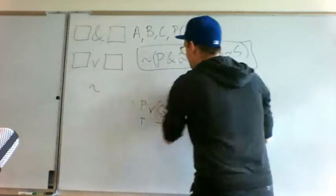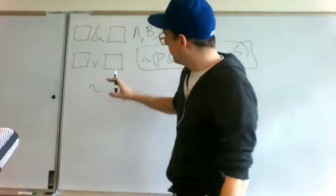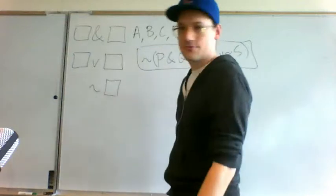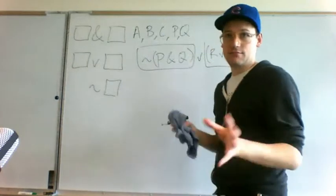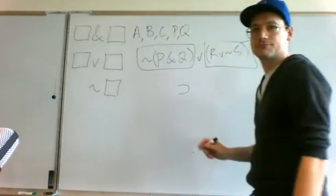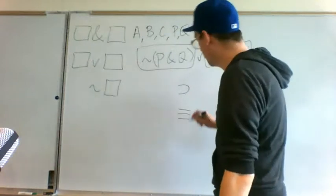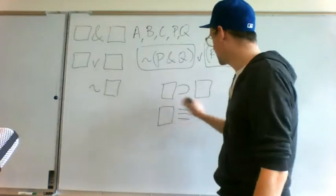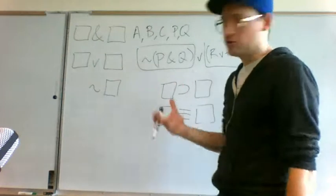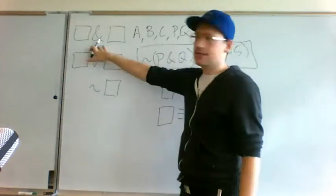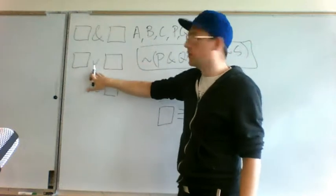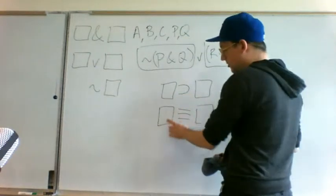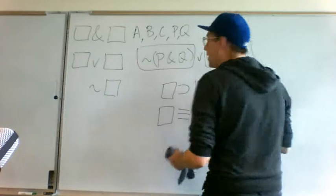The two operators we haven't talked about yet — the main things to cover today — are the conditional, the horseshoe symbol, and the triple bar or biconditional. Both of these have the same structure as AND and OR in that they put two chunks together, but they're going to have their own truth-functional shape. The way an AND statement is true or false depending on its component parts is different than with OR, and it will also have different patterns with the conditional — if something then something else — and the biconditional — something if and only if something else. So that's what we're going to talk about right now.